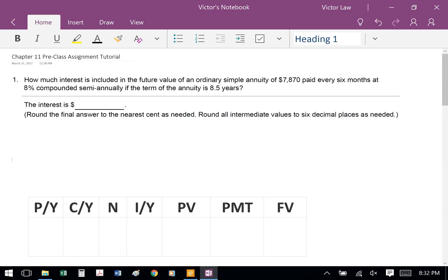Hello, welcome to Chapter 11 Preclass Assignment Tutorial. Question 1: How much interest is included in the future value of an ordinary simple annuity of $7,870 paid every 6 months at 8% compounded semi-annually if the term of the annuity is 8.5 years?